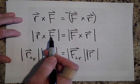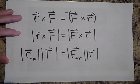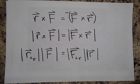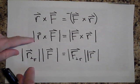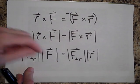The magnitude of R cross F is exactly the same as the magnitude of F cross R. So their magnitudes are the exact same, the value no matter which way you do this.